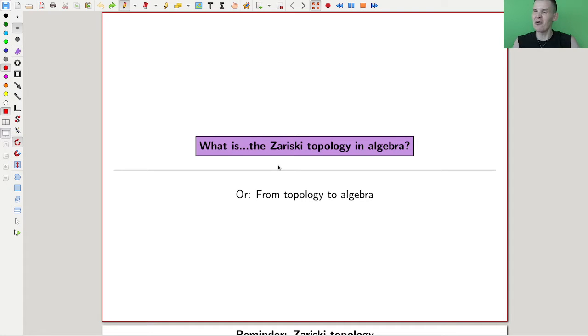Keep in mind that the whole point of algebraic geometry should be to translate geometry to algebra. In this case, topology to algebra. Topology, geometry, it's the same anyway in some sense.